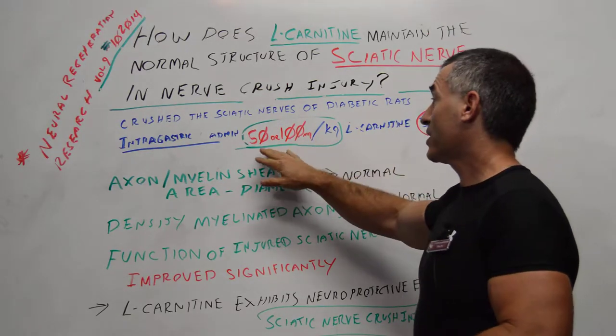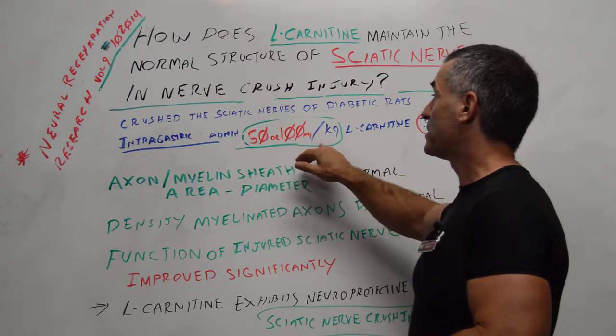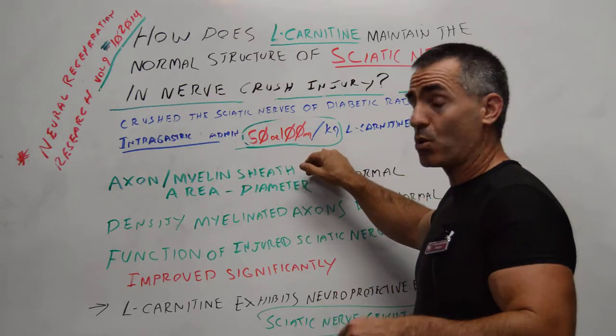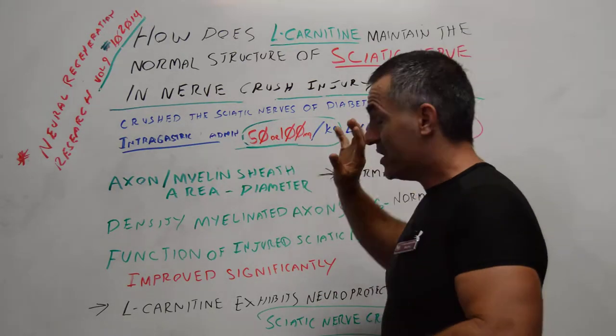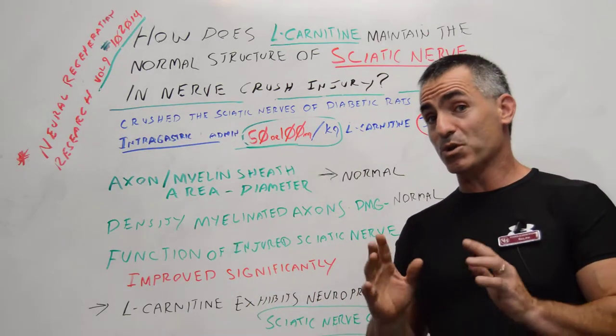And so you're looking at about 50 or 100 milligrams per about 2 pounds, 3 and a quarter ounces. This is what happened after 30 days, we're just talking about a month.